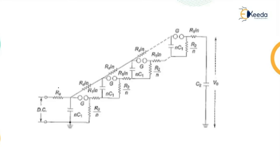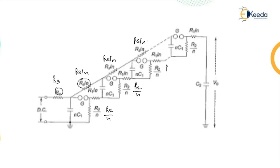The modified Marx circuit consists of resistances RS/n at each stage and R2/n across each capacitor, with R1/n in series, and n capacitors C1, with the DC supply connected at the input.